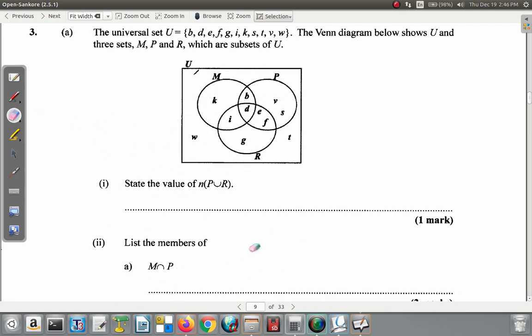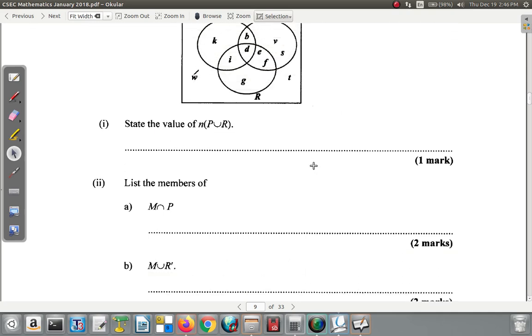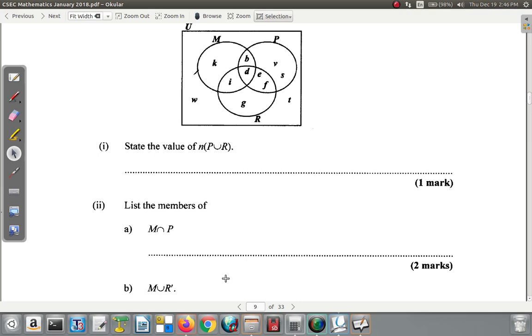Now M union R complement. P union R means what is in P and R or both. But this is M union R complement. So we need to make a note of what is in M, then what is in R complement, and we put them all together and write everything.